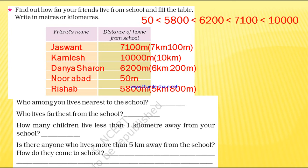Ascending order means smaller to greatest. The starting letter is A. We are arranging the values from smallest to greatest. Remember the crocodile mouth — the crocodile opens its mouth towards the greater number only, it eats only the greater number. So: 50 is smaller than 5800, 5800 is smaller than 6200, 6200 is smaller than 7100, and 7100 is smaller than 10,000.